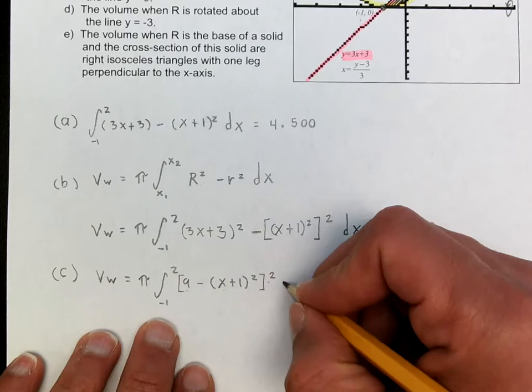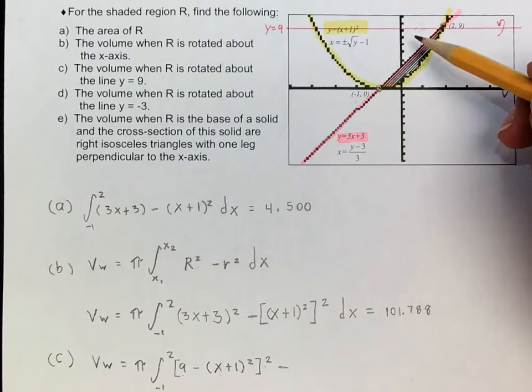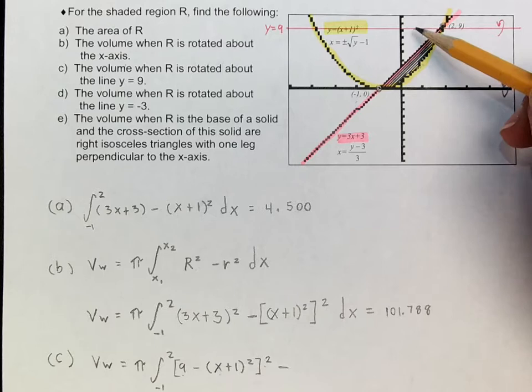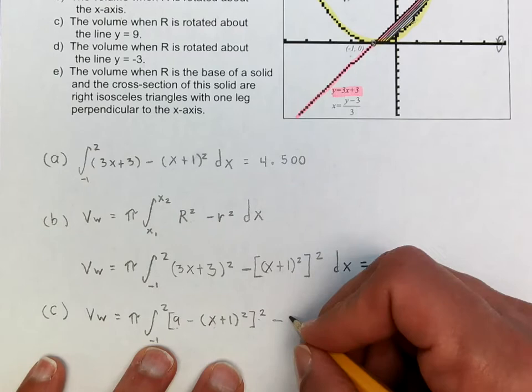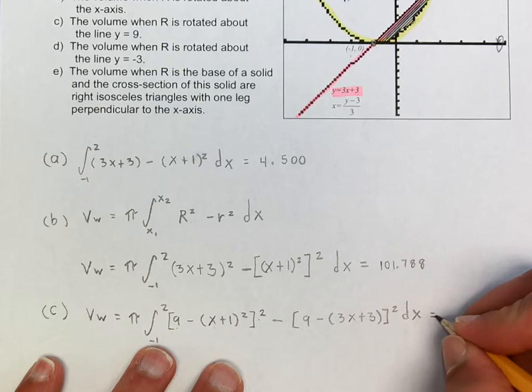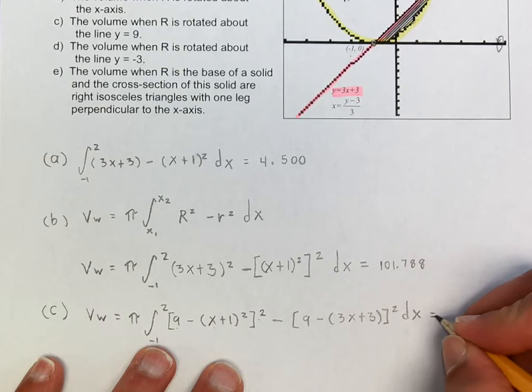Then we subtract the smaller radius, which is formed by y=9 and the line 3x plus 3. Using the same trick — top curve minus bottom curve — we get 9 minus (3x+3), and we square that smaller radius dx. That gives 152.681.